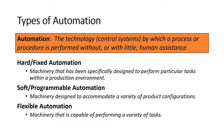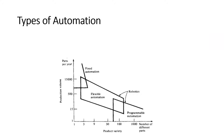Flexible automation works in between fixed and soft automation — it can be programmable or not programmable. If we look at this chart, it helps us understand where fixed, flexible, and programmable automation fit within a production environment.